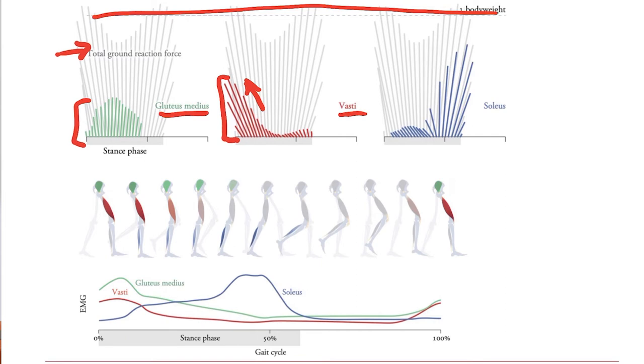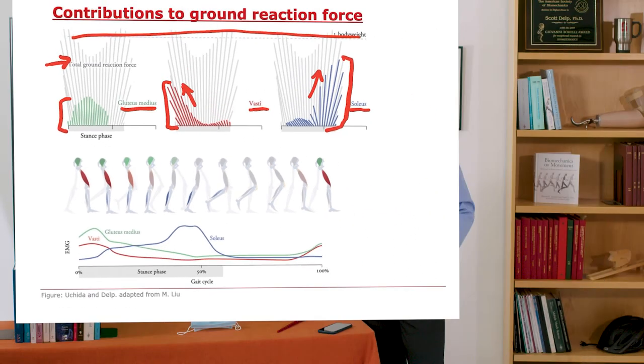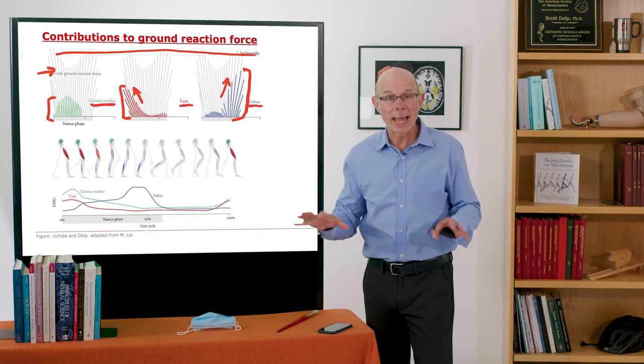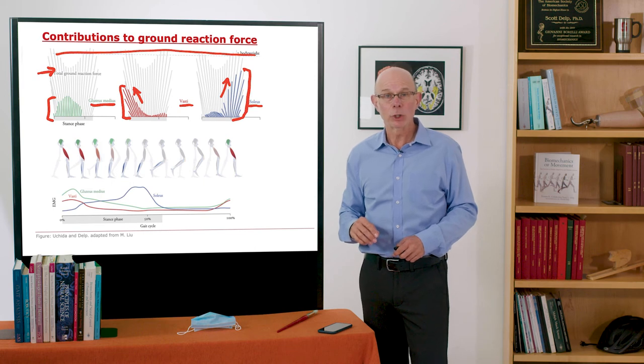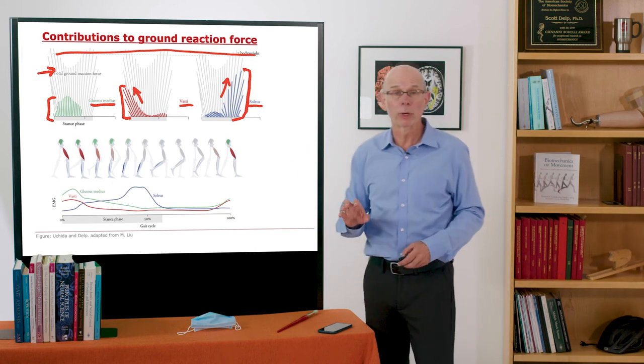Soleus and vastae work together at separate times. Vastae comes on early, soleus comes on late. You see soleus is hardly activated here but at the end of stance comes on, provides lots of body weight support and forward propulsion. So this is just three of the many muscles that are active in your lower limb but these happen to be three of the really big players.